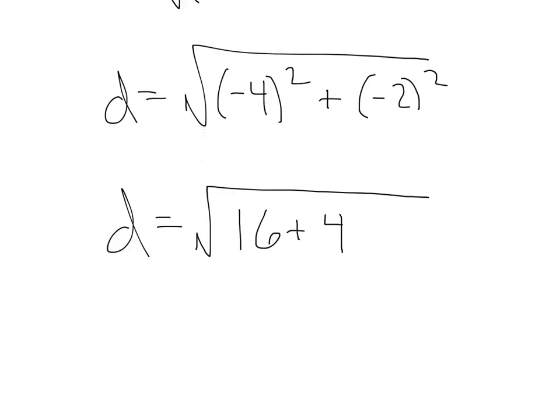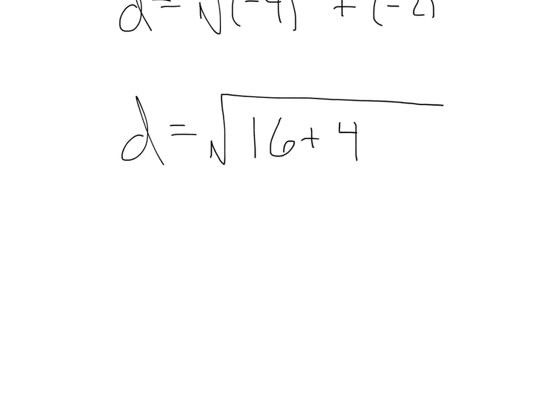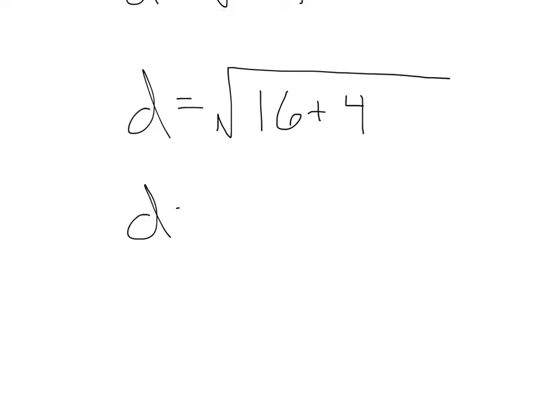Remember, when you square a negative, it becomes positive. Then, that's going to give us a grand total of the square root of 20. Now, keep in mind, from last unit, we can simplify this, right?